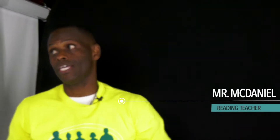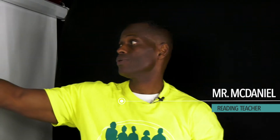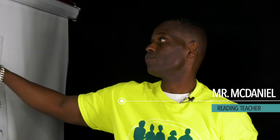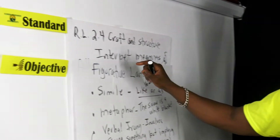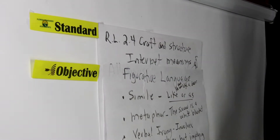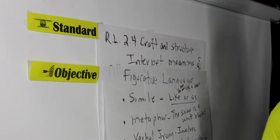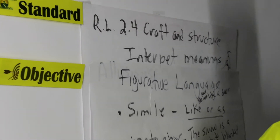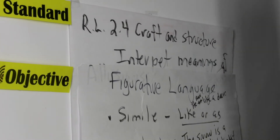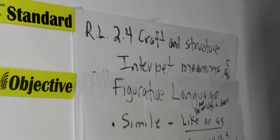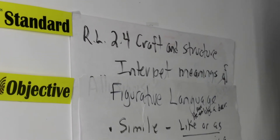Hey, welcome back. I'm back covering ELA Reading Literature 2.4, Craft and Structure. This time we're interpreting the meanings of figurative language, figurative speech. I'm Mr. McDaniel. We're back into this particular lesson for 6th, 7th, and 8th grade.